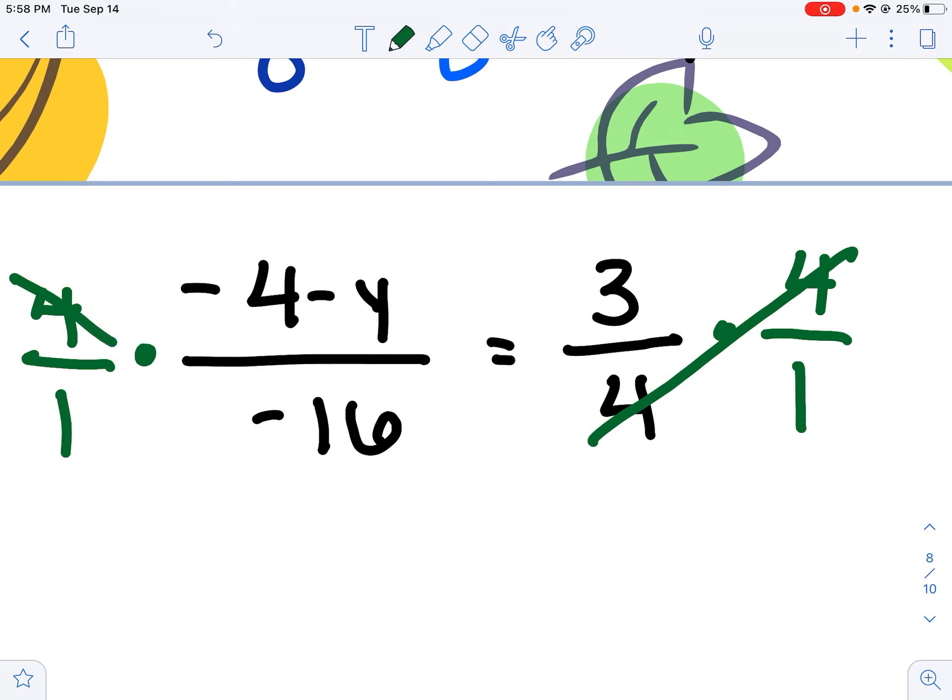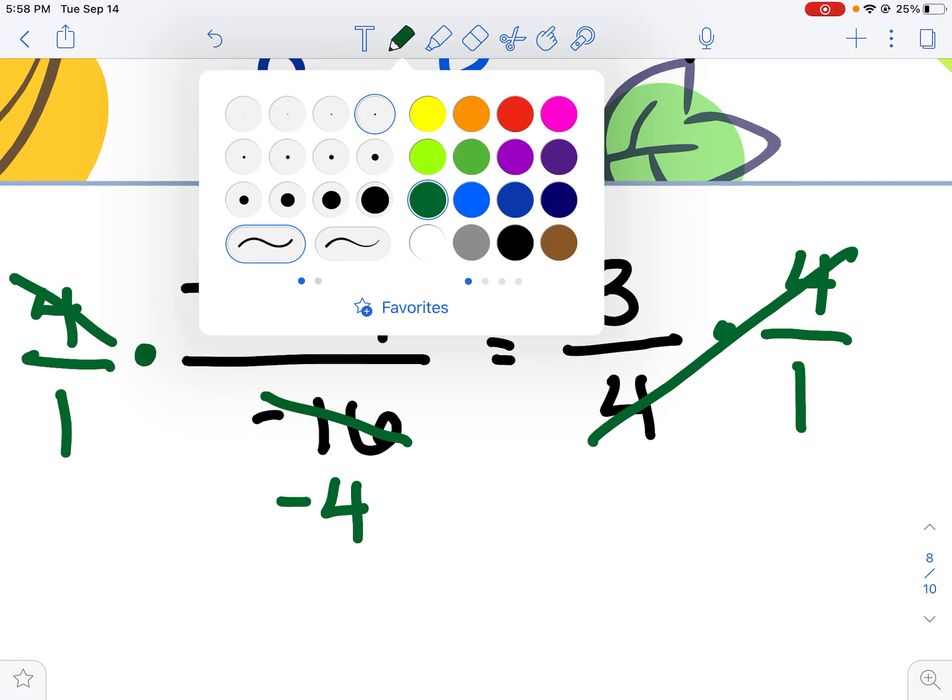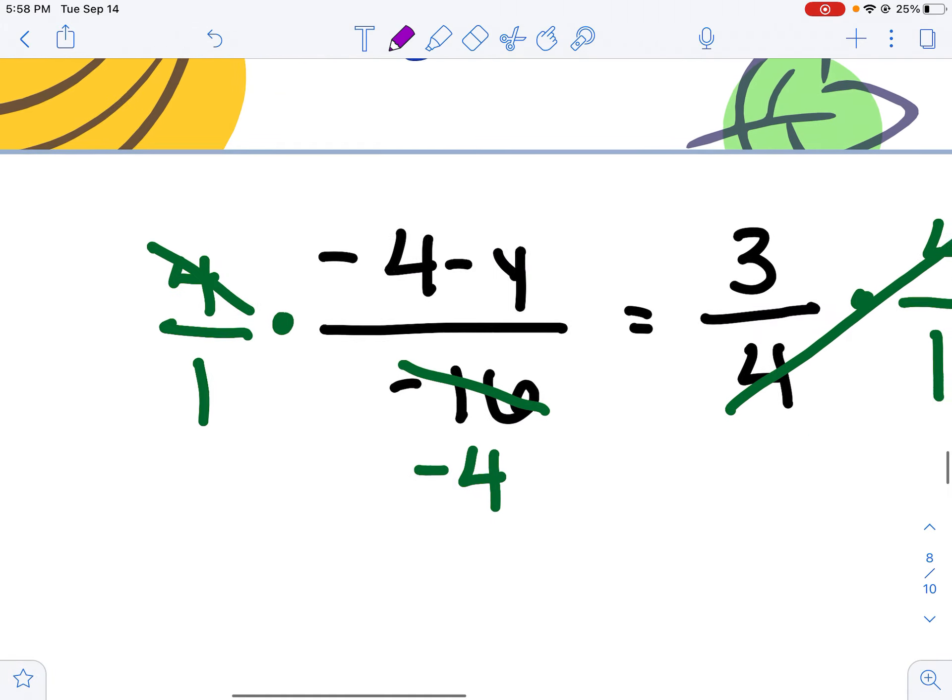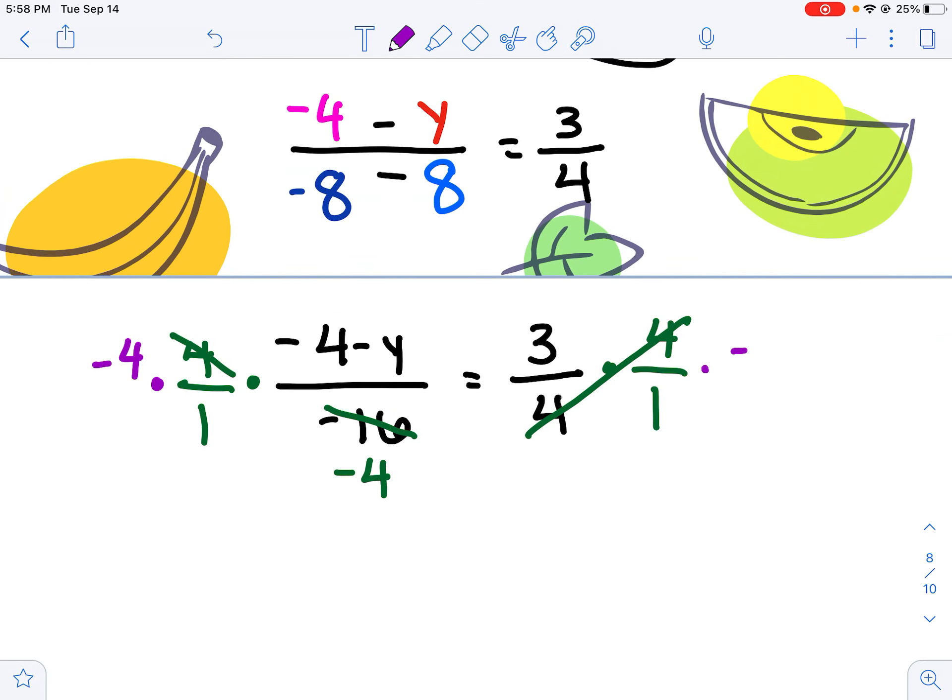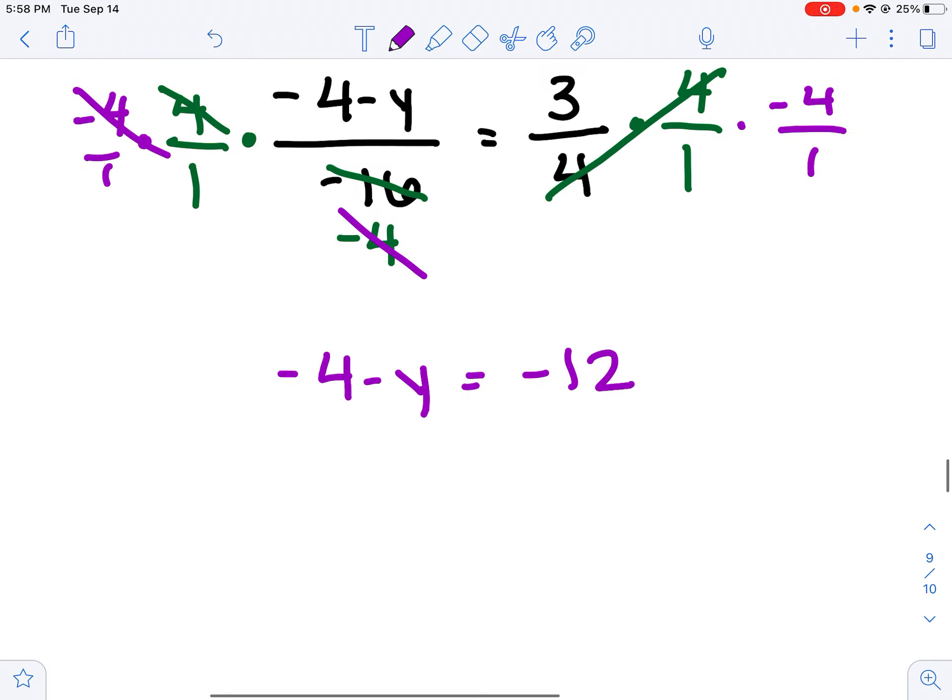This 4 will drop out. This 4 and this negative 16 will become a negative 4. To clear that negative 4, I'm multiplying both sides by negative 4. These will cancel out, and then I'm left with negative 4 minus y equals negative 12. Add my 4 over and I get negative y equals negative 8, which means y must equal 8.